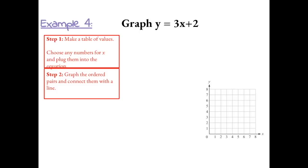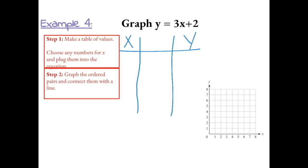Example 4: Graph y equals 3x plus 2. We're going to make a table of values. The left column represents our inputs, the right column represents our outputs, and the middle column holds our function rule. The first input value is 0: 3 times 0 is 0, plus 2 is 2. So our first ordered pair is (0, 2), which is right on the y-axis.